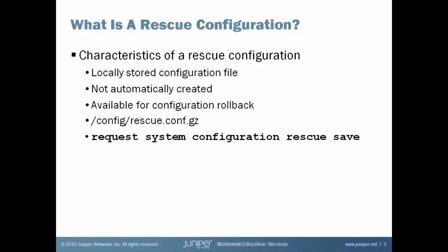What is a rescue configuration? A rescue configuration is a copy of the active configuration on any Junos platform. It is not automatically created. An administrator must execute in operational mode a 'request system configuration rescue save' command. Once that command is executed, a copy of the active configuration is created and stored locally on the device in the /config directory with the file name rescue.conf.gz.